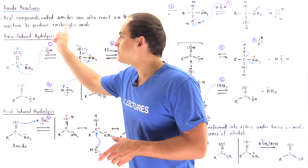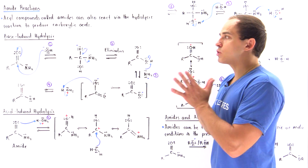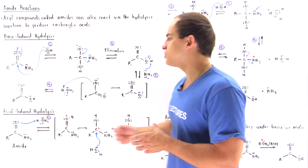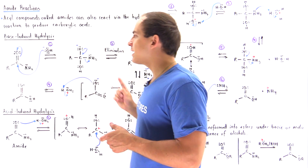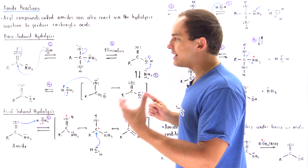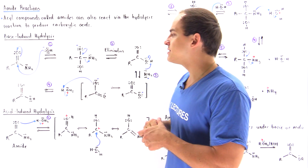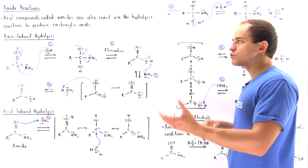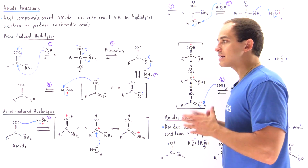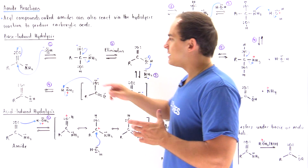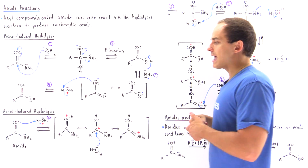This is the base-induced hydrolysis, in which we transform the amide into a carboxylic acid. The reaction mechanism is identical to when we transform esters into carboxylic acids in ester hydrolysis — it is very similar to ester hydrolysis, except we're using the amide instead of the ester.